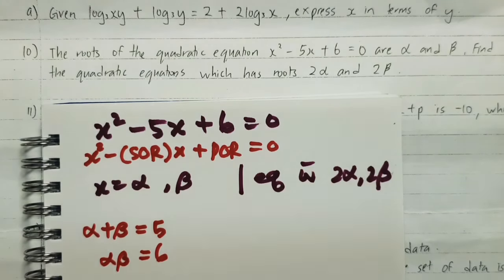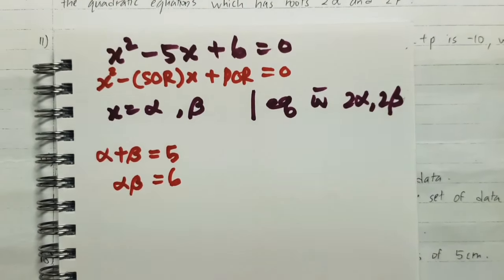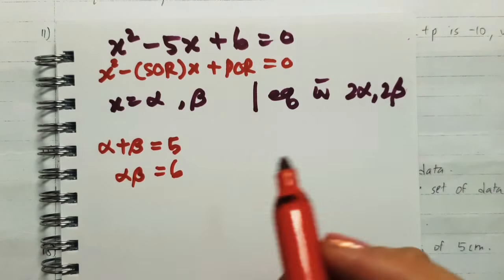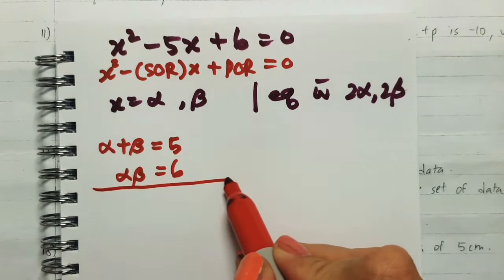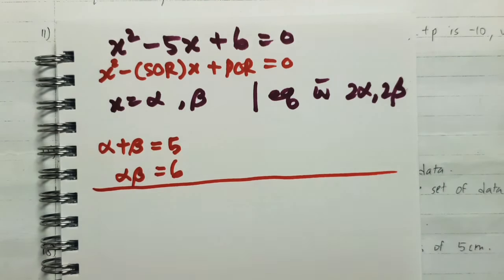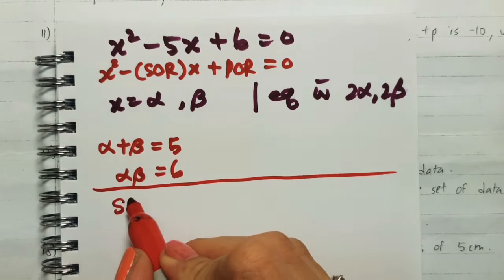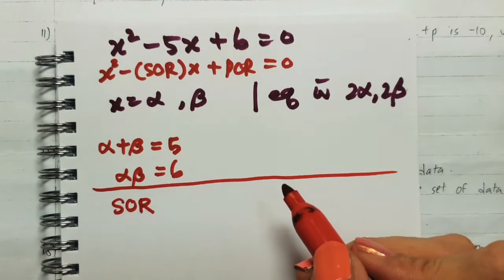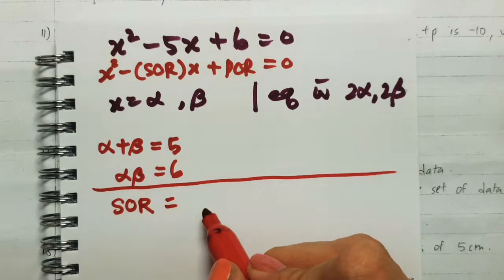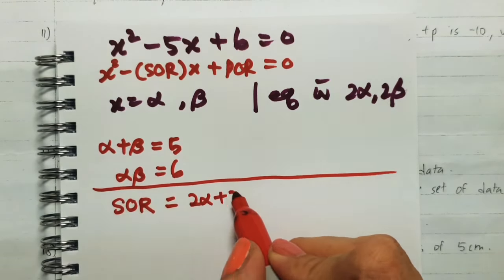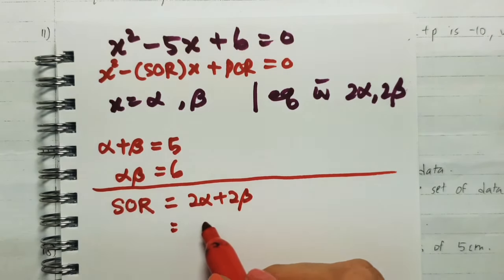So with this, we have to form the next equation that has 2α and 2β as roots. Let's find the sum of roots for the new equation. Our sum of roots here is 2α + 2β = 2(α + β).